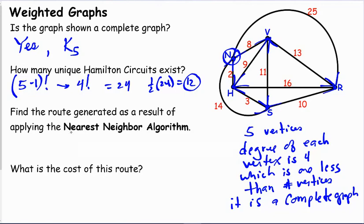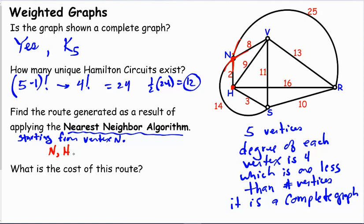However, we are going to find a route generated by the nearest neighbor algorithm. I forgot to say where to start. Let's say start from vertex N. So we'll treat that as the home. So vertex N, what is the cheapest edge connecting vertex N? And we see we have an edge that is 25, 8, 2, and 14. So the H with the weight of 2 between N to H is the nearest neighbor. So we start making our list N, H.